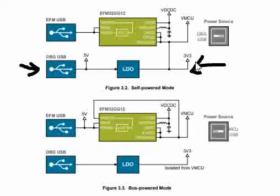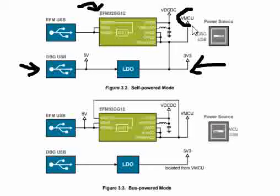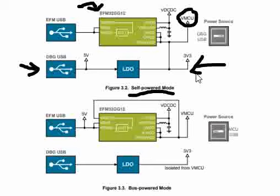This 5 volts is converted to 3.3 volts using the onboard regulator, which further powers the actual MCU — the EFM32 GG12 microcontroller. This is called the VMCU rail, which is the output of this LDO. This mode is called self-powered mode, where the onboard regulator powers the chip instead of the 5 volts directly powering the chip.